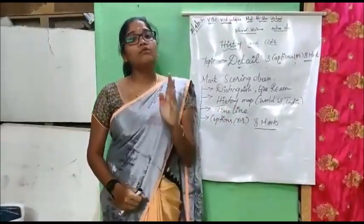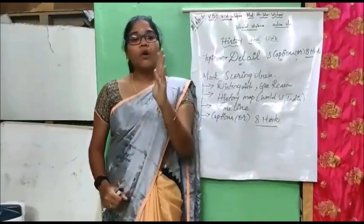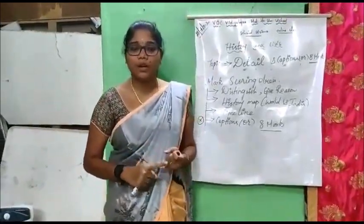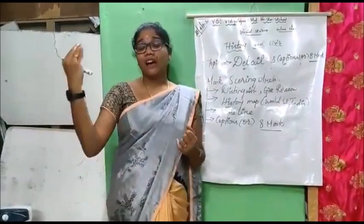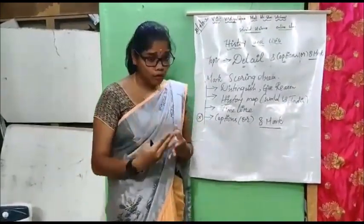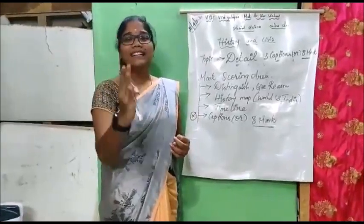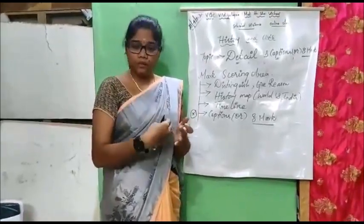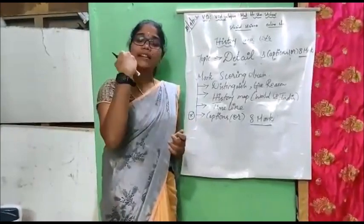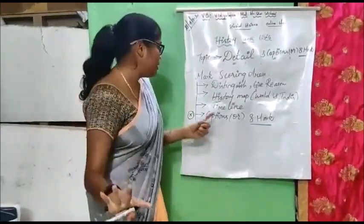What you should not do — I am going to tell you now. Avoid repeatedly writing the same heading. For example, World War 1, World War 2, and Round Table Conference 1, Round Table Conference 2, Round Table Conference 3 — these are repeated questions. Avoid the heading repeatedly. Write only one incident that cannot be repeated again.